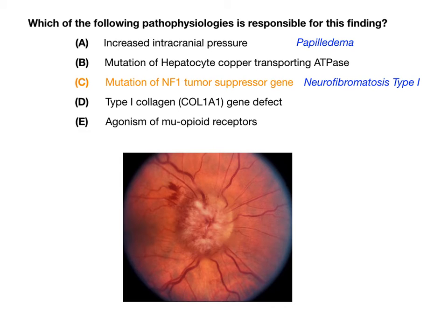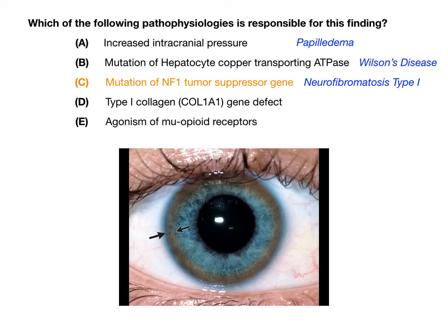Choice B says mutation of hepatocyte copper transporting ATPase, which refers to Wilson's disease. In Wilson's disease, there is a very high-yield associated finding known as a Kaiser-Fleischer ring — copper accumulation around the eye forming a brown, bronze halo. Even if you weren't sure you were seeing Lisch nodules, if you were certain you did not see Kaiser-Fleischer rings, you could eliminate choice B knowing it describes the pathophysiology of Wilson's disease.